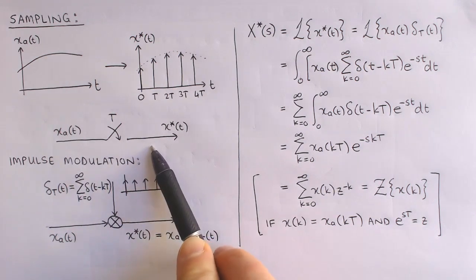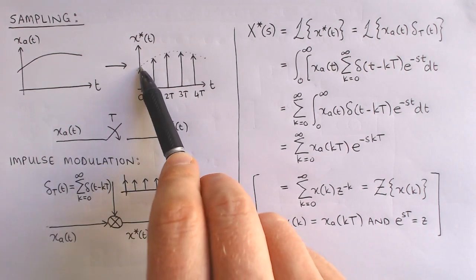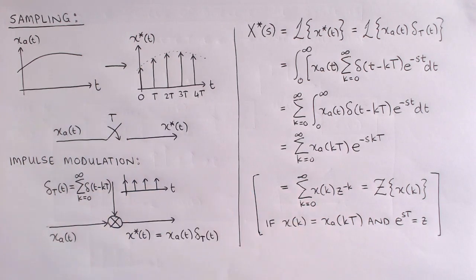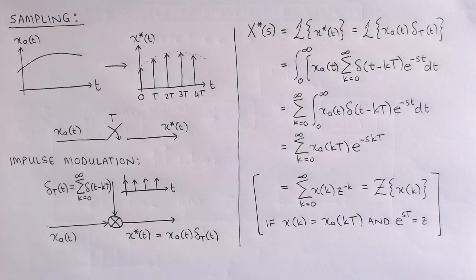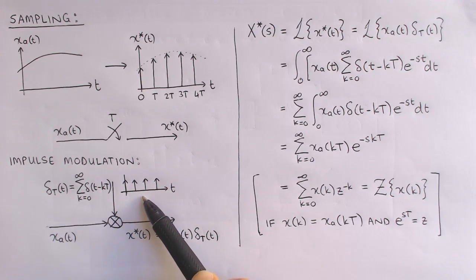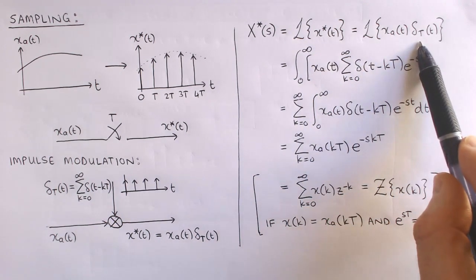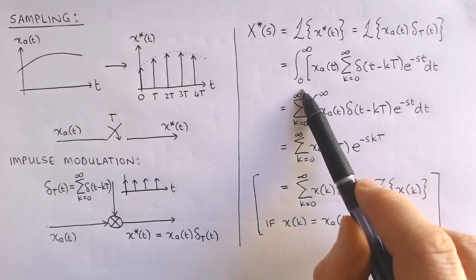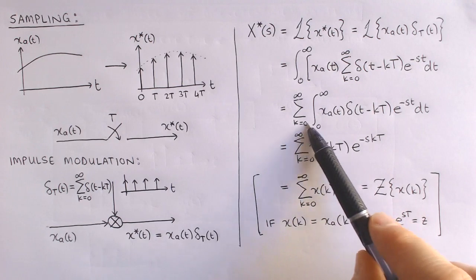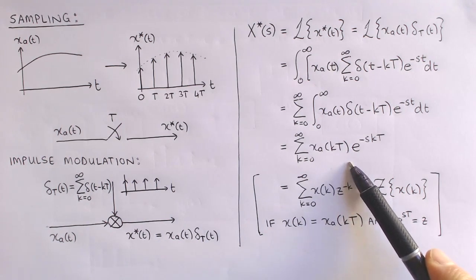The sampling process can be viewed as follows. At each sampling instant, the value of the analog signal is selected, and the weight of the impulse at this sampling instant is set to this value. An equivalent and mathematically convenient model is that of impulse modulation. Here, the analog signal is modulated or multiplied with a carrier signal, which in this case is a train of unit impulses. We now take the Laplace transform of the sampled signal, which is the Laplace transform of the impulse modulated analog signal. After applying the definition of the Laplace transform, switching the sum and integral around, and calculating the integral of impulses, we get this infinite sum, which is our Laplace domain model of sampling.